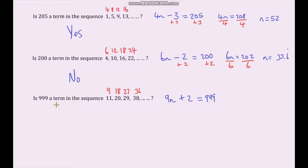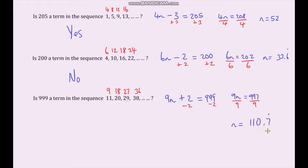I know straight away that 999 is not going to be in this sequence because 9 times 111 is 999. But solving the equation anyway, we get a decimal, confirming that 999 is not in the sequence.